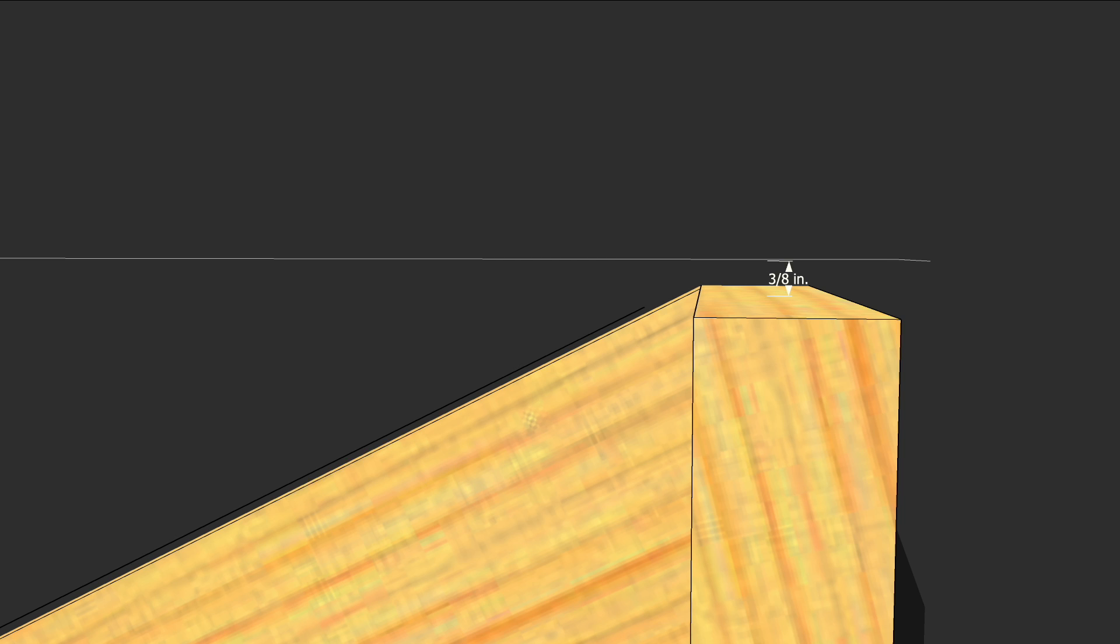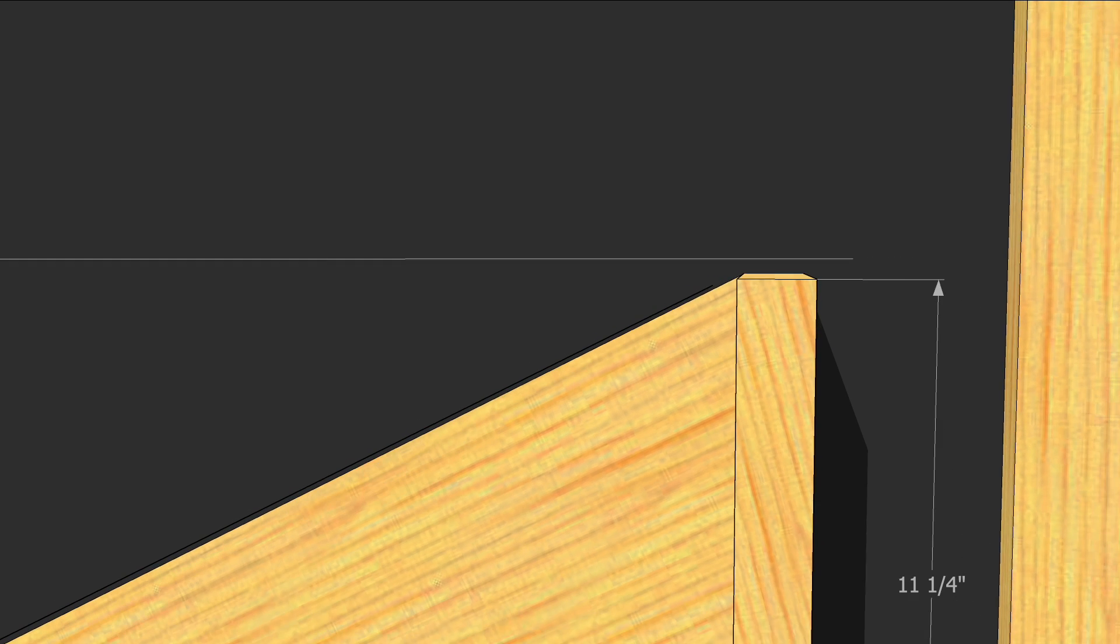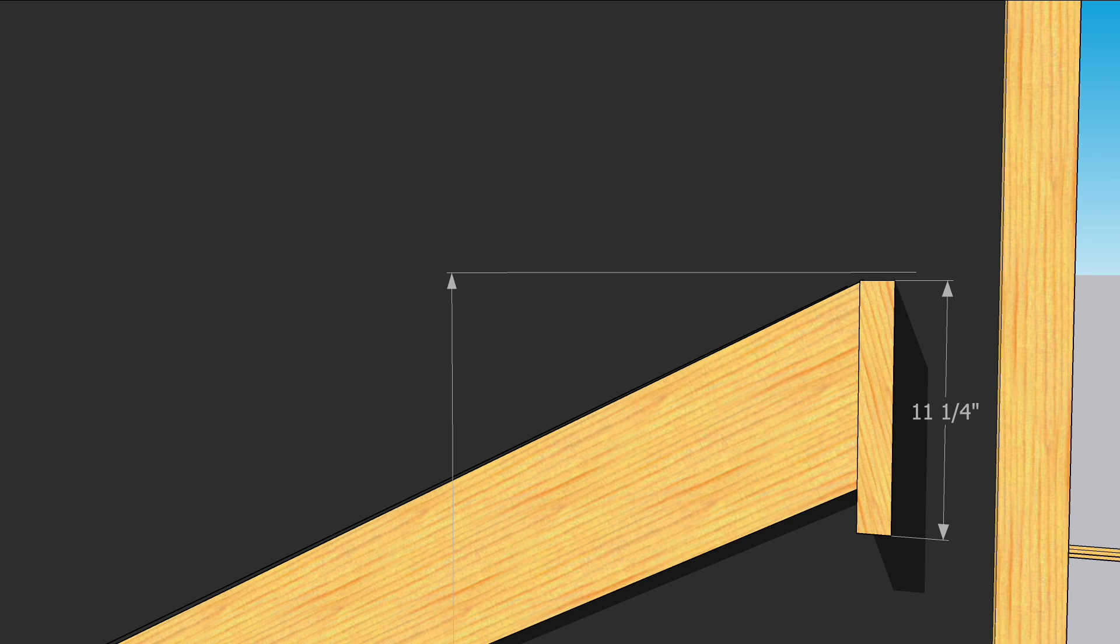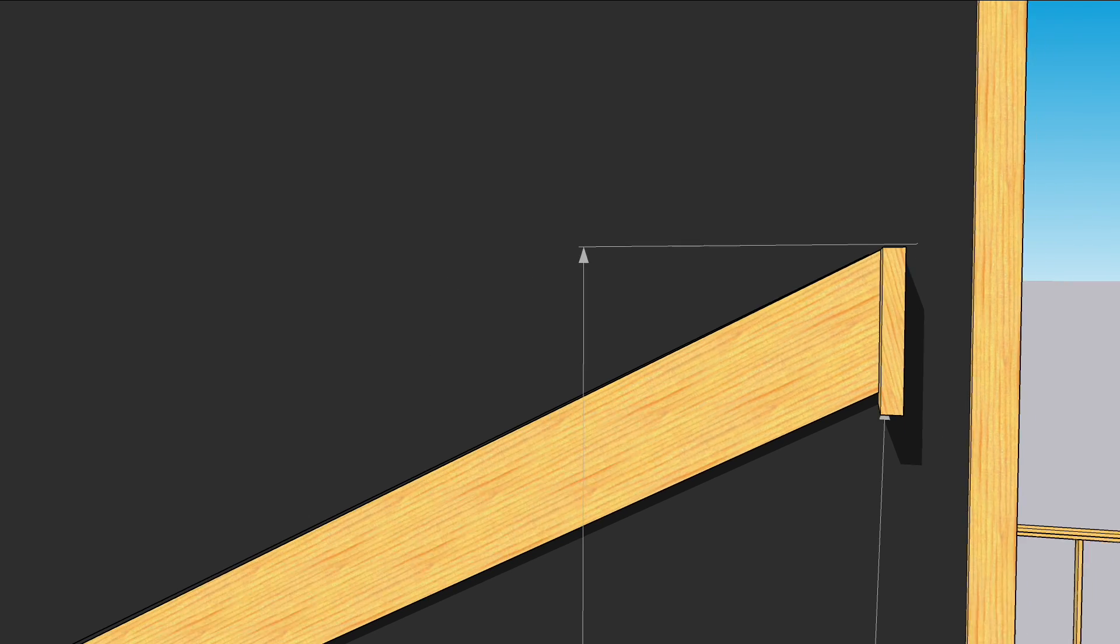Another thing to account for when cutting the ridge pole to hold up the ridge is the height of the ridge. We'll need to subtract 11 and a quarter inches from 7 foot 5 and 5 eighths.